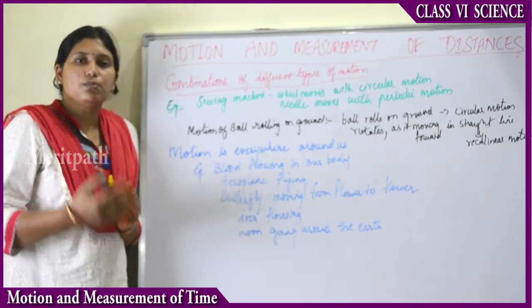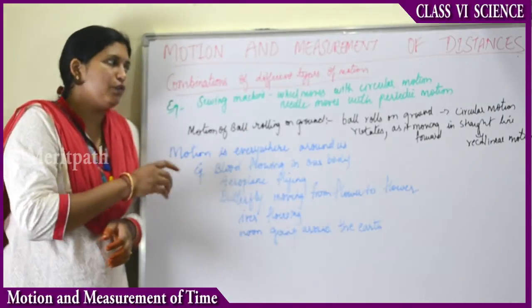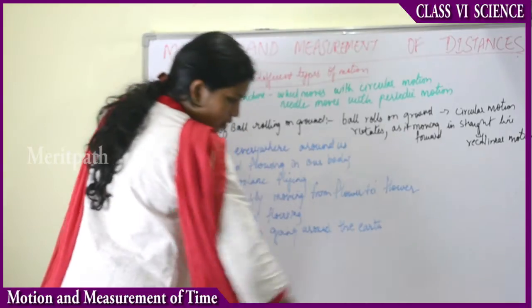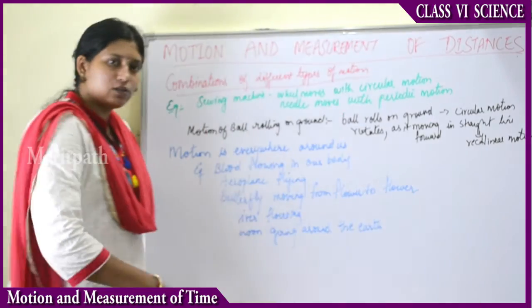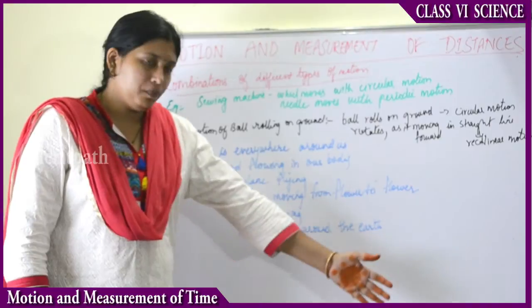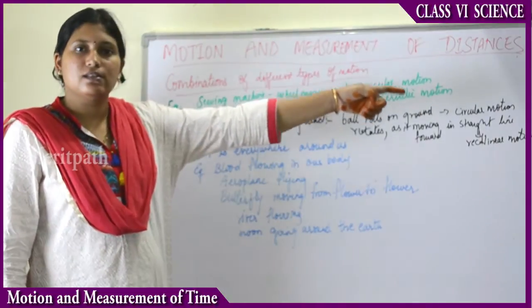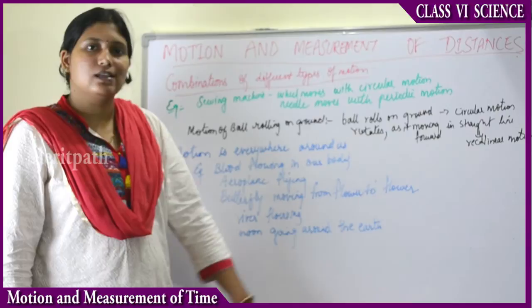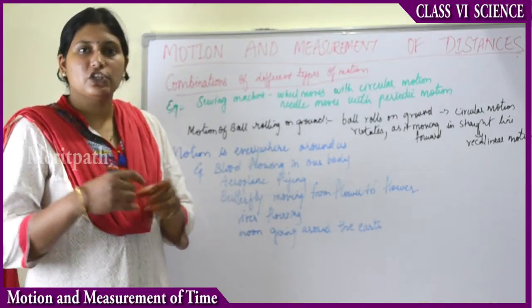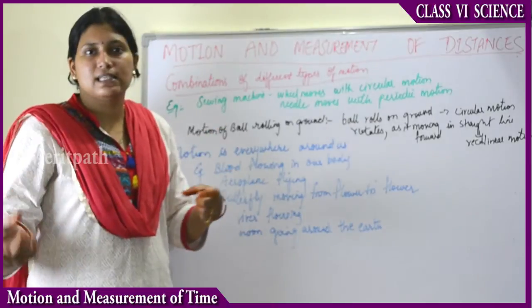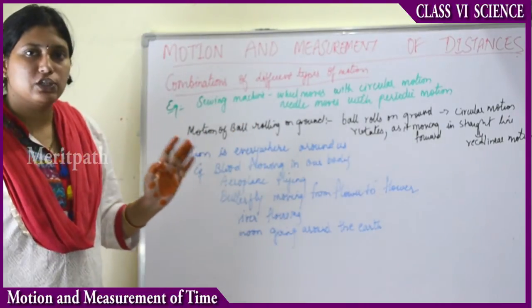These motions can be measured with the help of distances. If a ball rolls from point A to point B, we can tell how much distance it has travelled using meters, centimeters, or kilometers. Motion and distance are always interrelated — the measurement of motion can be expressed in terms of how much distance has been travelled. This is the end of the chapter on motion and measurement of distance.